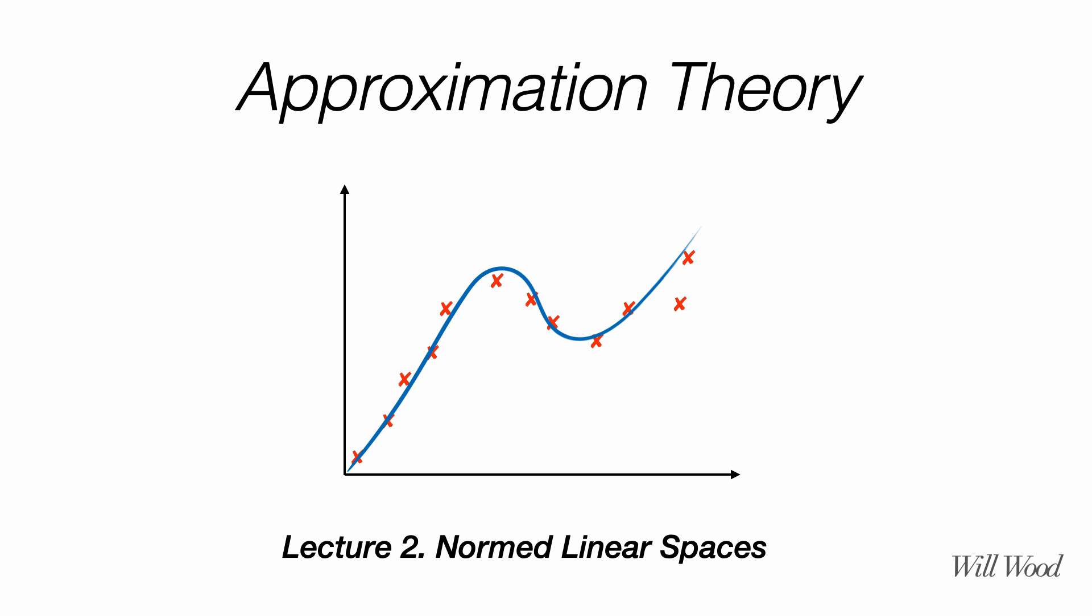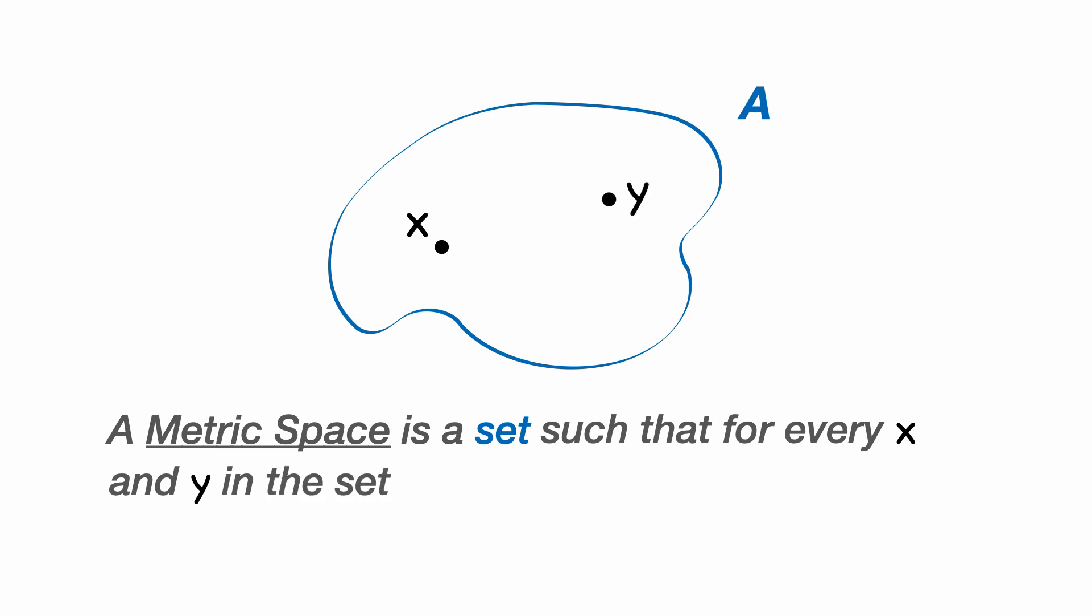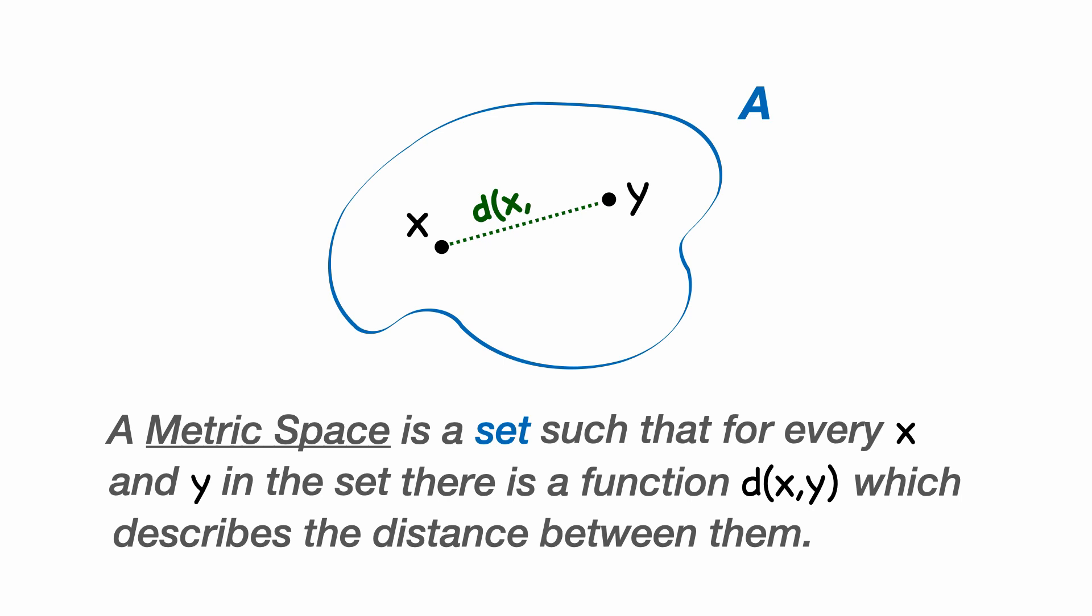Now these build from what we looked at previously in metric spaces, and so we'll just recap what a metric space is. So a metric space is a set, we'll call this one A, such that for any two elements in a set, x and y, we have a distance function d of x and y, which calculates the distance between them.